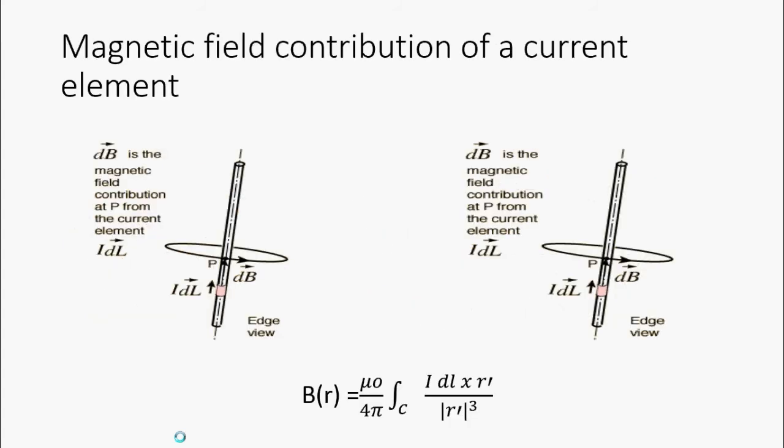The Biot-Savart law is useful for computing the resultant magnetic field B at a position generated by a steady current I, for example due to a wire, a continual flow of charges which is constant in time and neither accumulates nor depletes at any point.